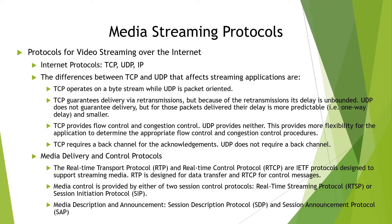UDP provides more flexibility for the application to determine appropriate flow control and congestion control procedures. TCP requires a back channel for acknowledgement of every byte, but UDP does not require any back channel. Web and data traffic are delivered through TCP/IP because guaranteed delivery is far more important than delay or delay jitter. But for media streaming, the uncontrollable delay of TCP is unacceptable. Compressed media data is usually transmitted via UDP or IP, while control information is usually transmitted via TCP/IP. UDP is always preferred in video streaming.